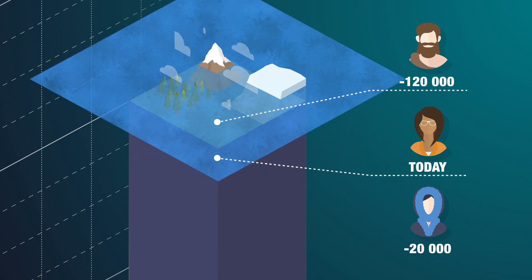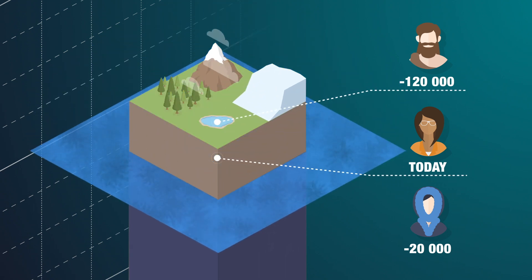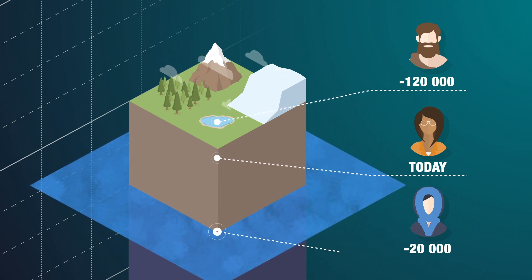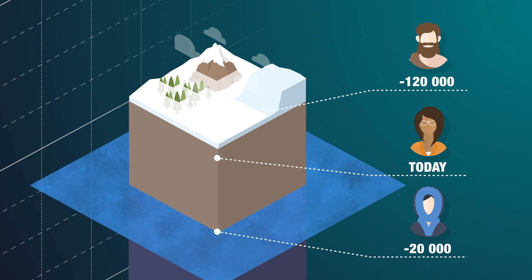And only 20,000 years ago, it was around 125 metres lower than today because the water was stored as ice in two massive ice sheets.